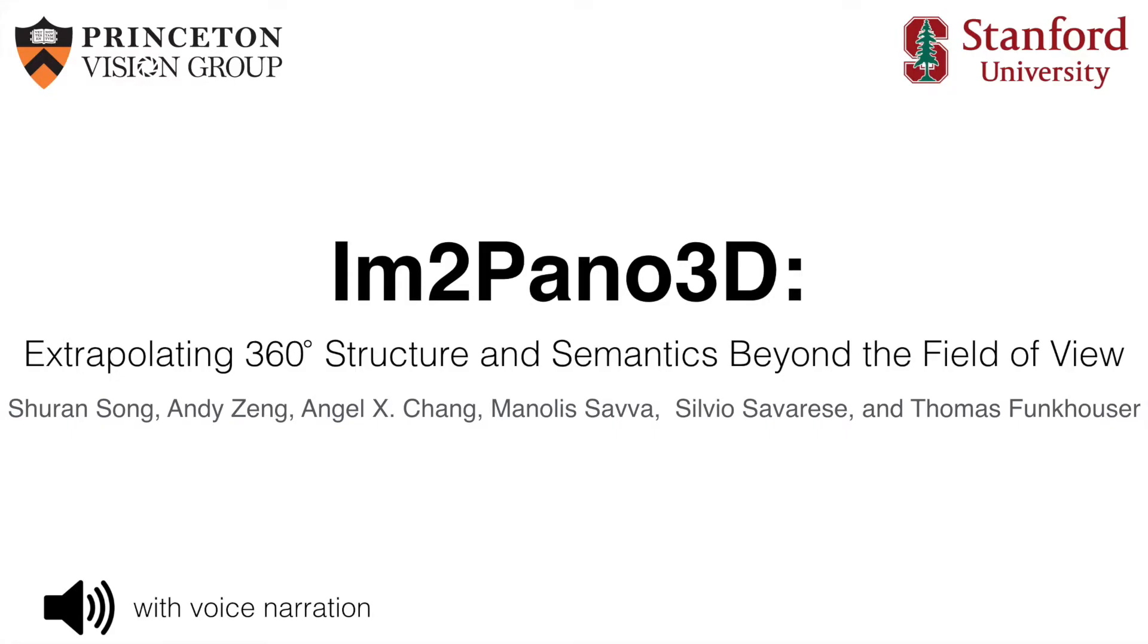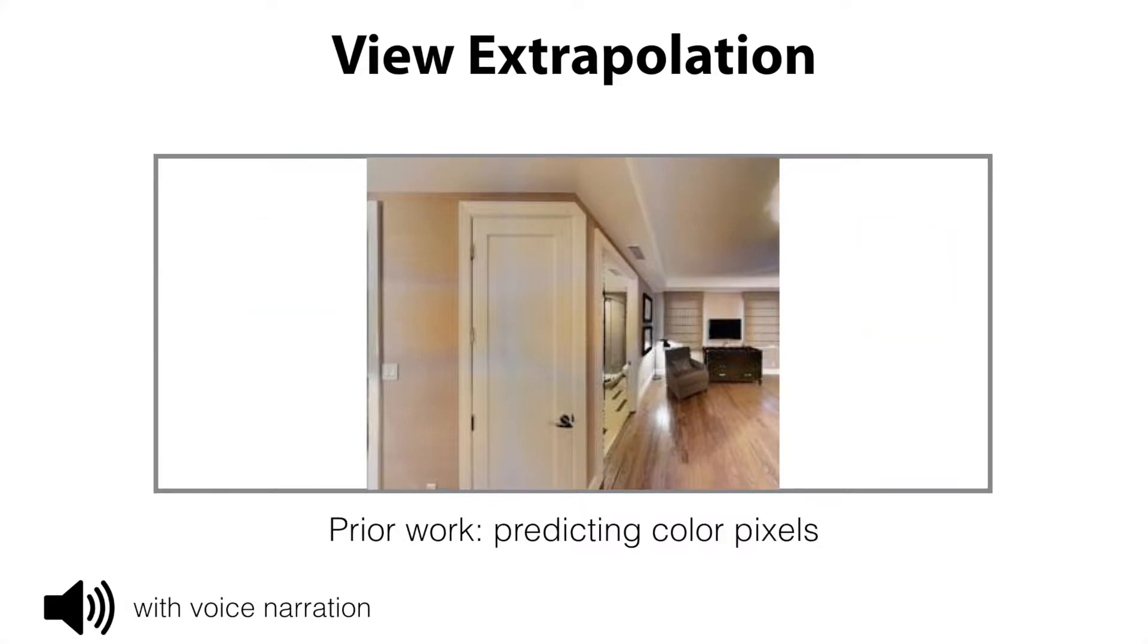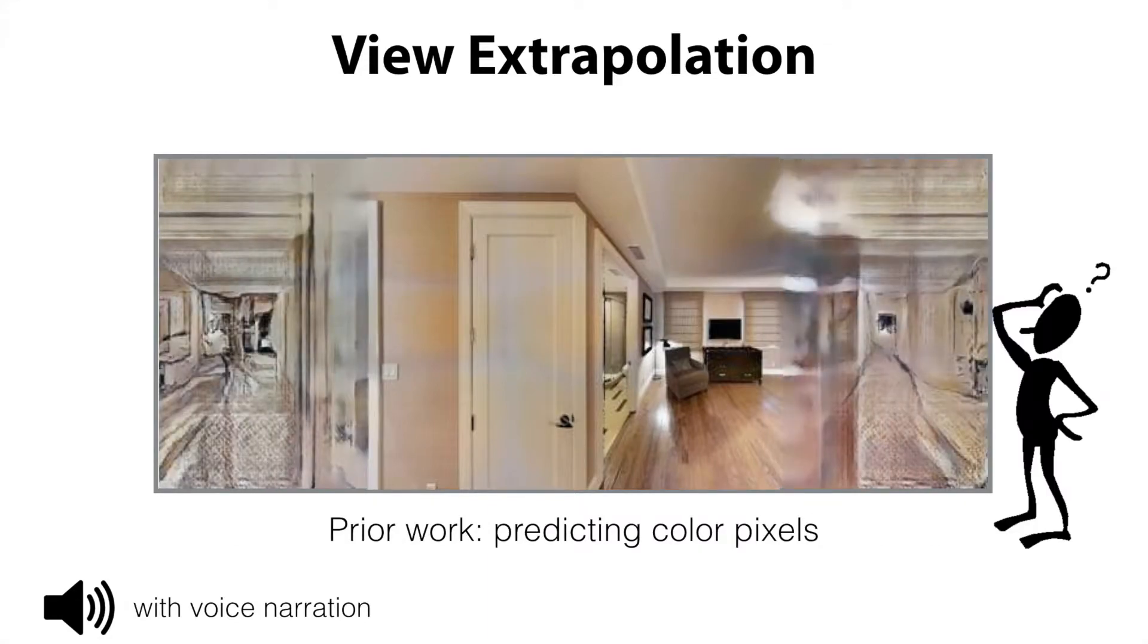Inferring information outside a camera's field of view is useful for many applications, such as robotic navigation and planning. However, previous work typically only predicts color pixels for the task. While inspiring, it is hard to use these results directly for high-level reasoning.